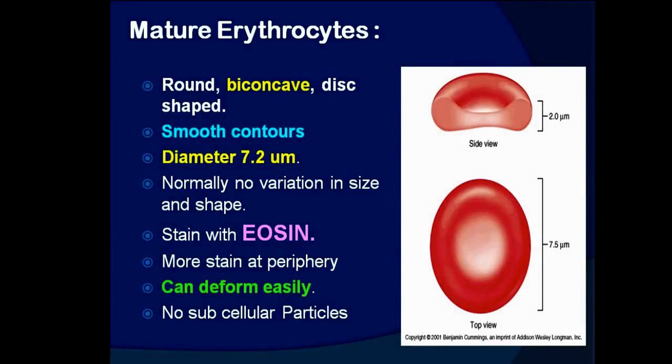Mature erythrocytes are round biconcave disc-shaped with smooth contours. Diameter is about 7.2 micrometers. Normally there are no variations in size and shape. They stain with eosin, with more staining towards the periphery. They can deform easily and have no subcellular particles.